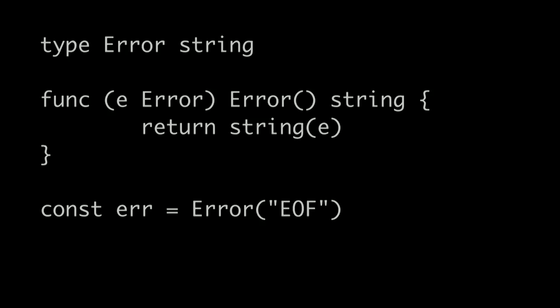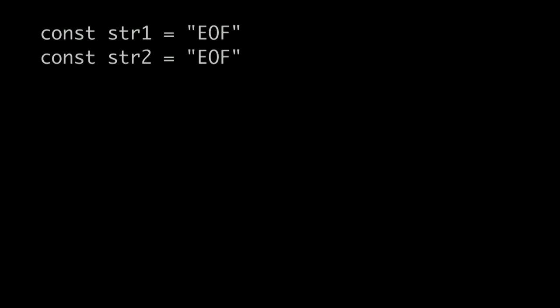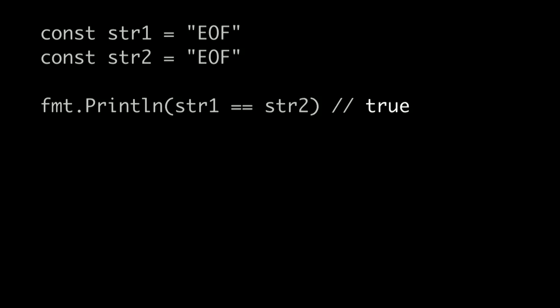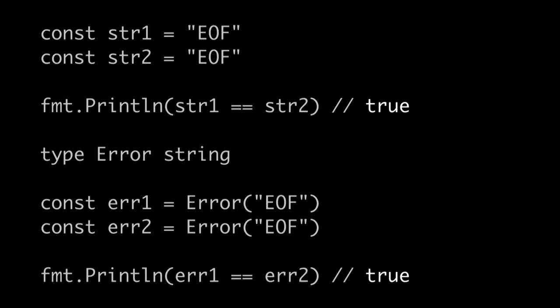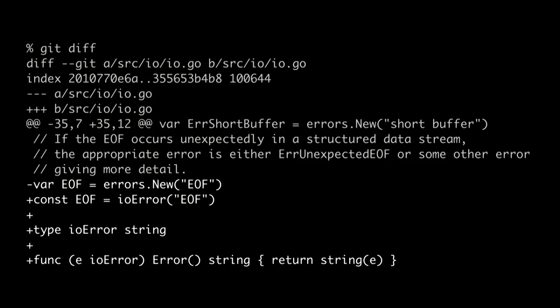As constants of our error type are not variables, they're immutable — they can't be changed. And additionally, two constant strings are always equal if their contents are equal. So string one and string two are equal. It follows that two constants of a type derived from string with the same contents are also equal. So to say this another way, equal constant error values are the same in the same way that the literal 1 in your program is the same as all the other literal 1s in your program. So now we have all the pieces we need to make sentinel error values like io.EOF and RSA verification error immutable, fungible, constant expressions.